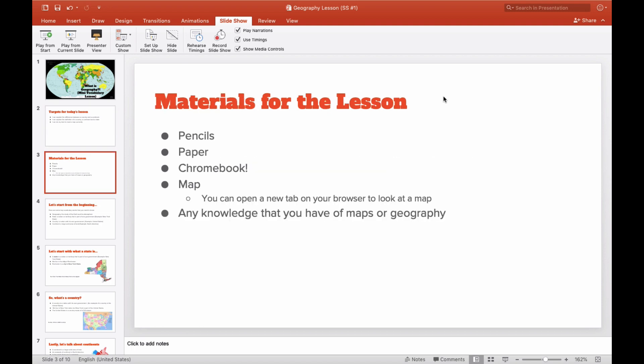So let's get into our materials. We are going to need pencils, paper, Chromebook, or I should actually just put any device that you have, really. So if you have an iPad, if you have your phone, if you have anything that you're using to watch this video, that is okay. Of course, a map. You can open a new tab on your browser to look at a map. It's just so you have one handy. And any knowledge that you have of maps or geography in general.